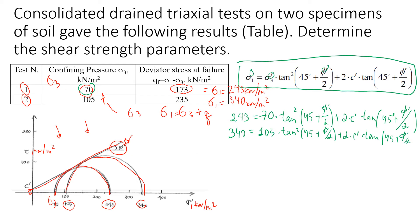The technique that I'm going to use is to subtract equation one from equation two. In this case we have 340 minus 243, that will be 97, and then we have 105 minus 70, which will give us 35.